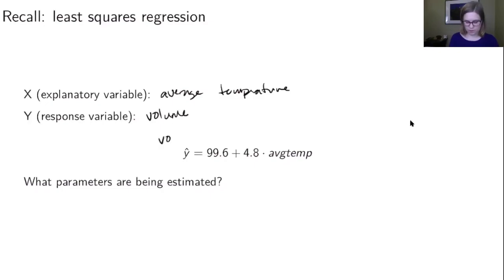We could write out the regression equation as ŷ, or volume hat, equals 99.6 plus 4.8 times the average temperature. That hat over volume or over y means it's a predicted value. It's not the exact value; it's whatever the predicted value is on the line.